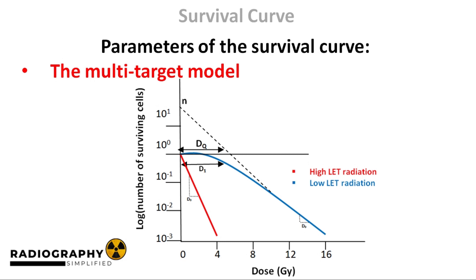Why is it called the quasi-threshold dose? A threshold dose is a dose below which there would be no radiation effect. However, stochastic radiation effects can occur at the lowest of radiation doses, meaning there is technically no such thing as a threshold dose for radiation effects. This is why we use the term quasi-threshold dose, which means almost threshold dose. It is also because radiation effects can occur at the lowest levels that we are advised to practice radiography using the as-low-as-reasonably-achievable, or ALARA, principle. We'll talk more on stochastic effects later in the series.